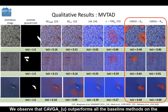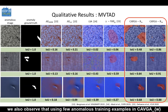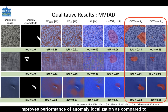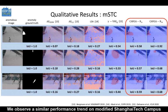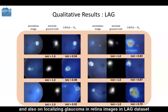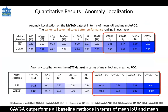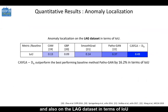We observe that CAVGA-U outperforms all the baseline methods on the MVTEC anomaly detection dataset with a higher IOU. Furthermore, we also observe that using few anomalous training examples in CAVGA-W improves the performance of anomaly localization as compared to CAVGA-U. We observe a similar performance trend on the modified Shanghai Tech Campus dataset and also on localizing glaucoma in retina images in the LAG dataset. CAVGA outperforms all baseline methods in terms of mean IOU and mean area under ROC curve (AUROC) on the MVTEC anomaly detection dataset, modified Shanghai Tech Campus dataset, and also on the LAG dataset in terms of IOU.